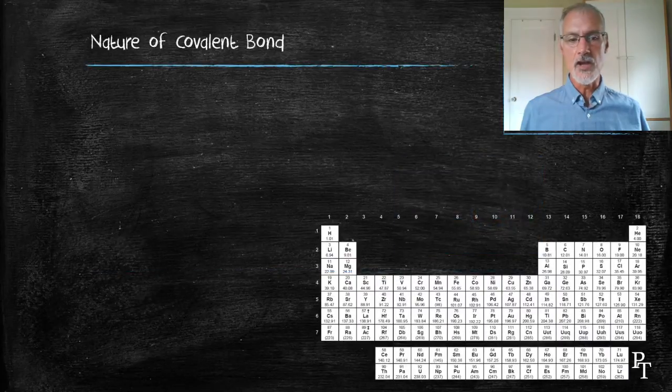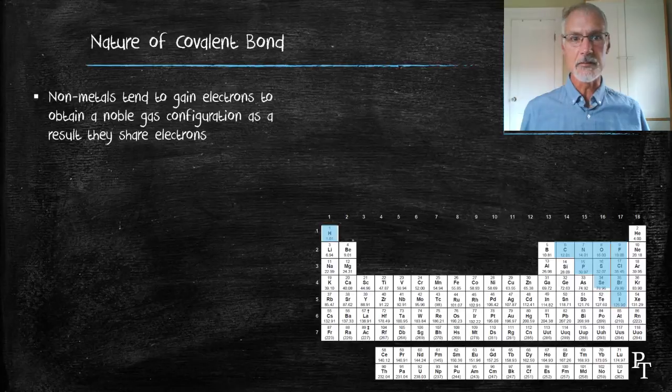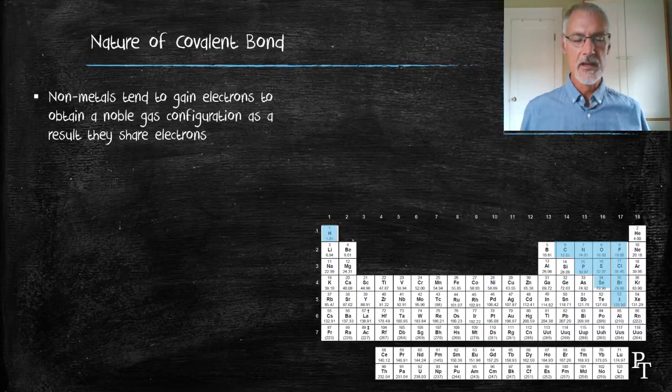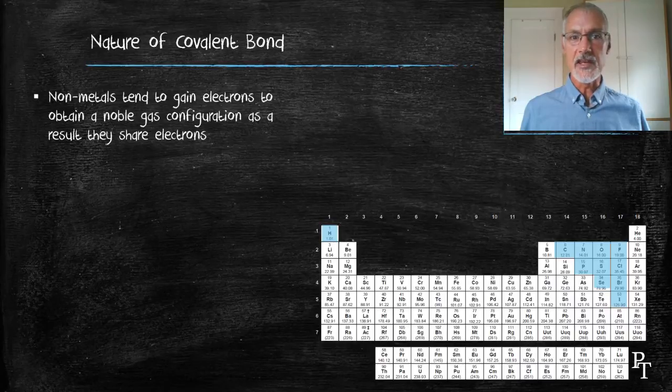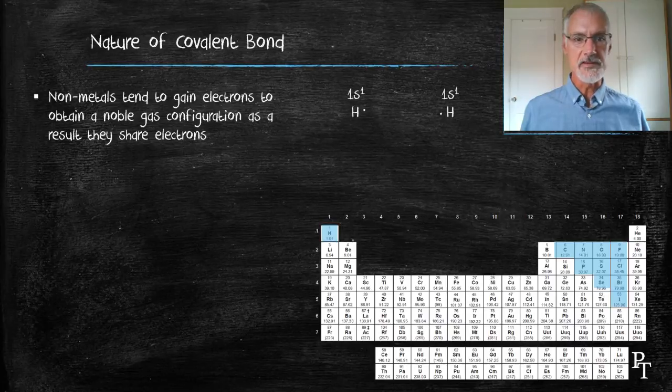Covalent bonds by and large involve non-metals. Non-metals we can see highlighted here in our periodic table, and don't forget hydrogen that exists over there in column number one. The goal of our non-metals is to gain electrons and obtain the configuration of the nearest noble gas.